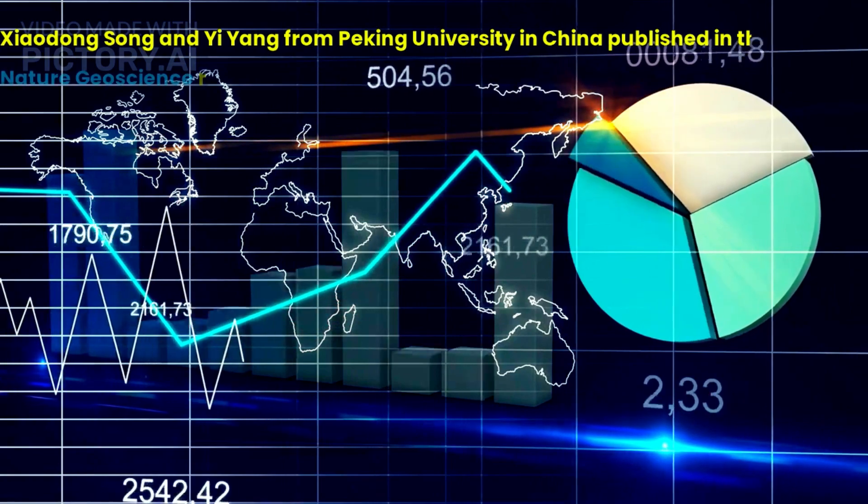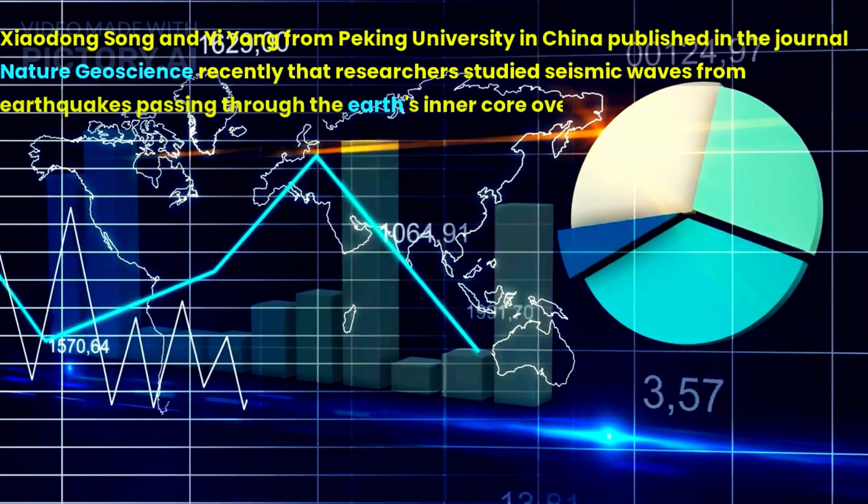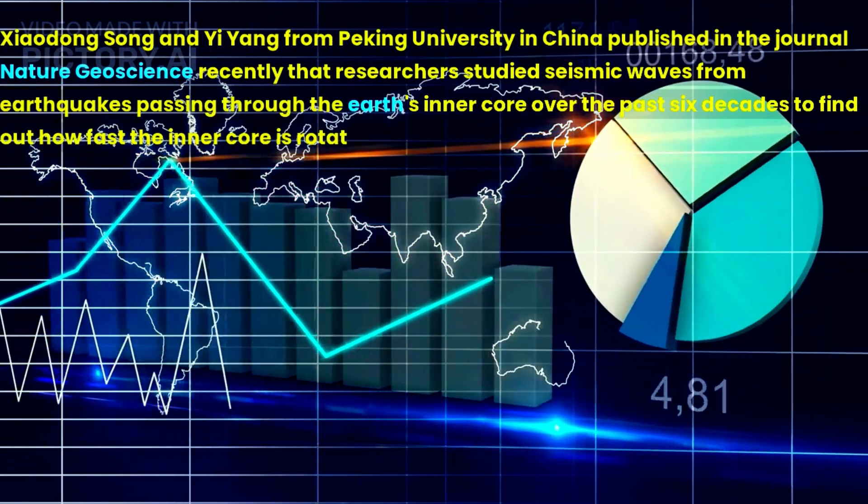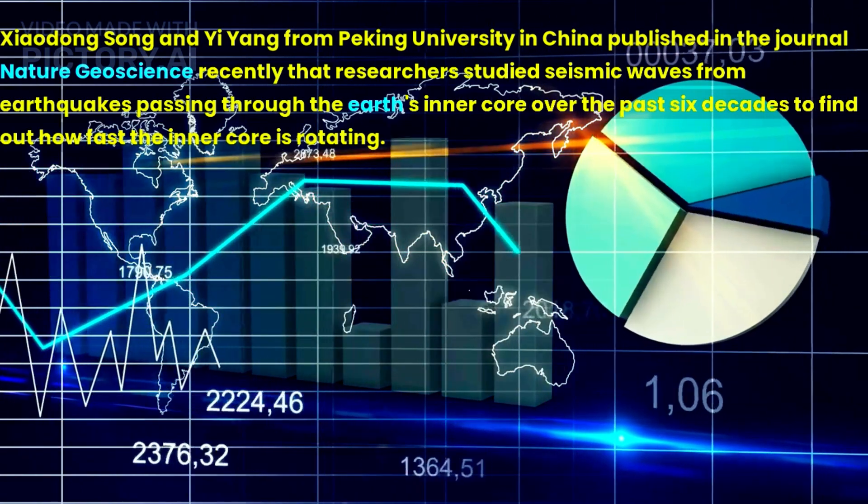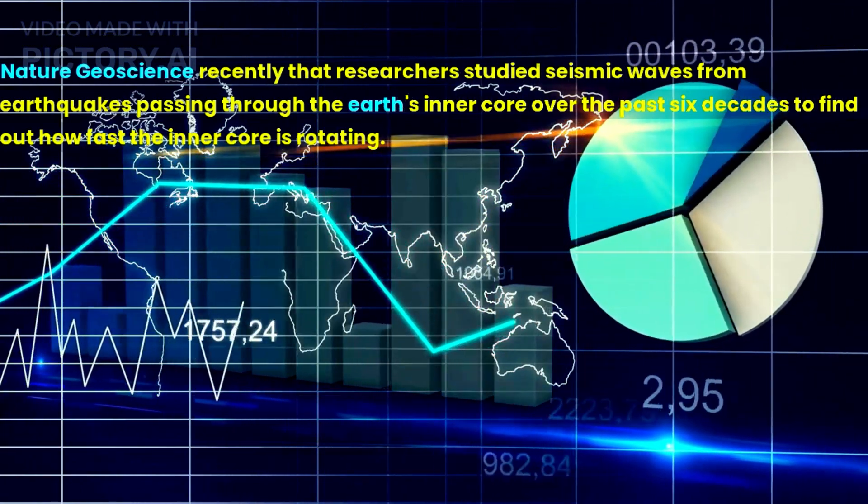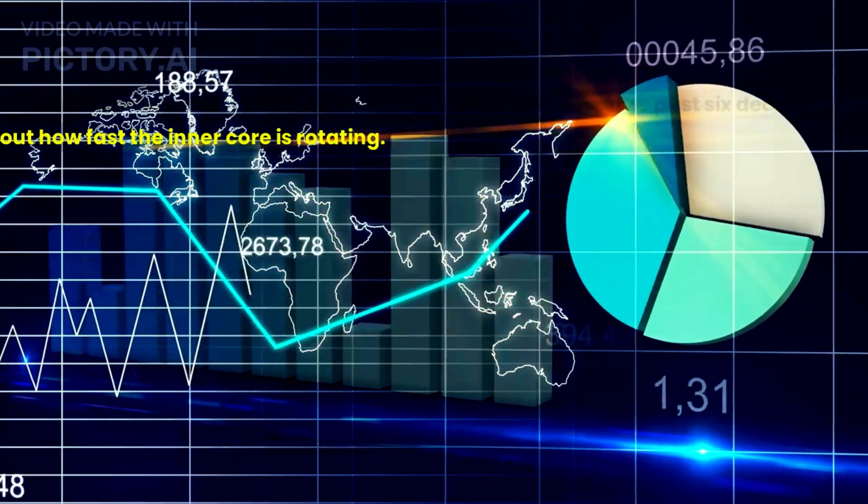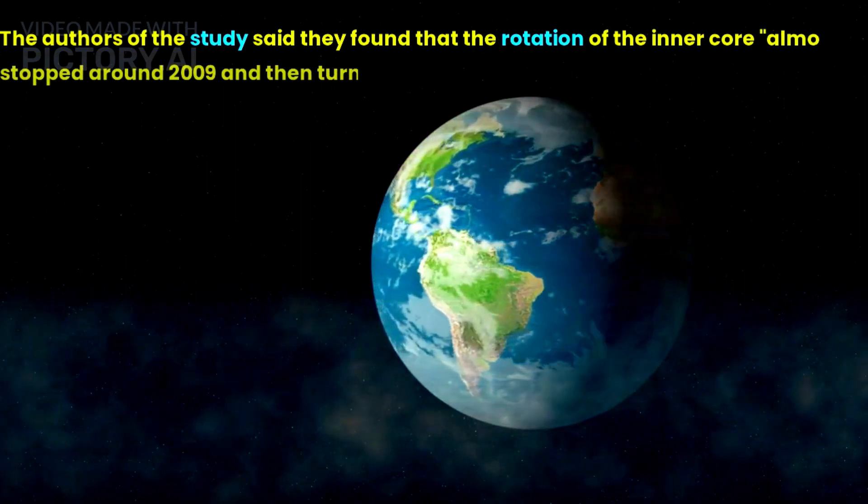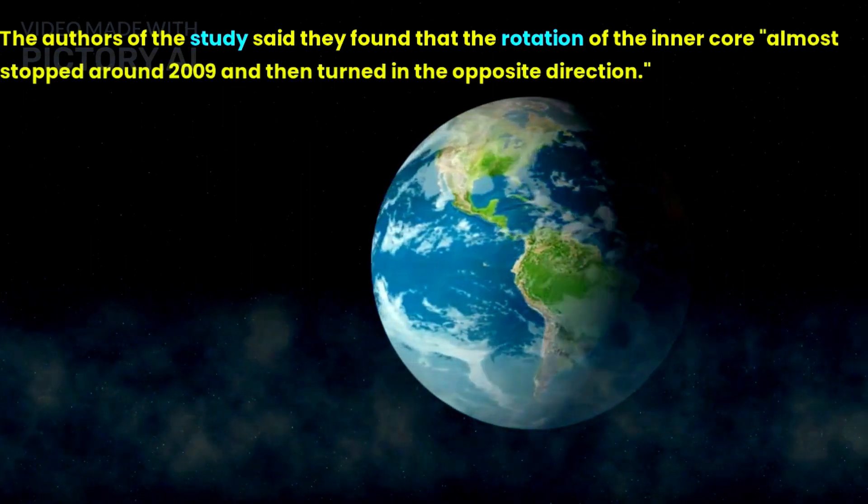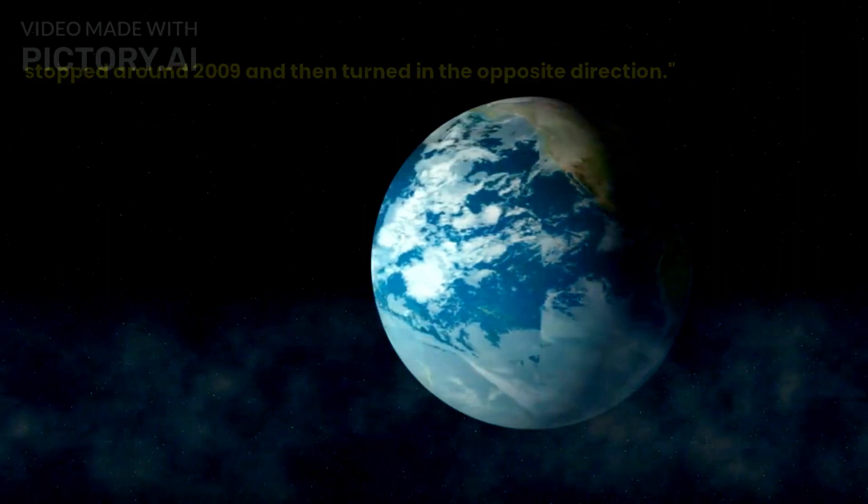Xiaodong Song and Yi Yang from Peking University in China published in the journal Nature Geoscience that researchers studied seismic waves from earthquakes passing through the earth's inner core over the past six decades to find out how fast the inner core is rotating. The authors found that the rotation of the inner core almost stopped around 2009 and then turned in the opposite direction.